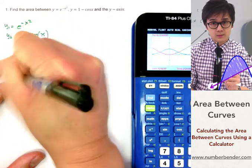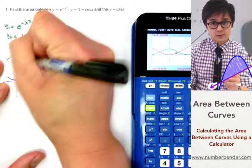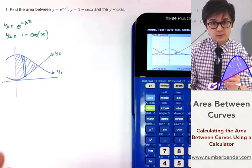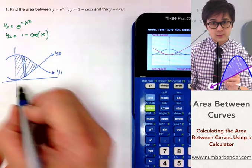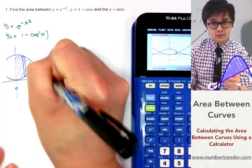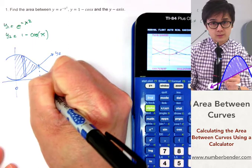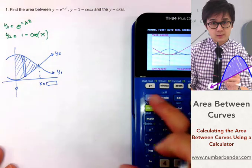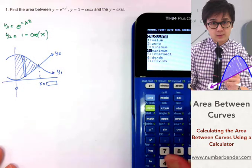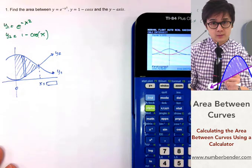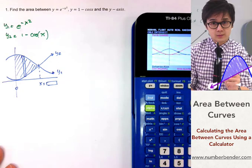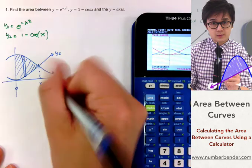Using the vertical method or the top minus bottom method, we'll be able to find the integral from zero up until this value of x. To find the point of intersection, we'll use the calculator: second function trace for calc, go to intersect which is 5, and it will ask you to use the first curve and the second curve to approximate the point of intersection, and this is giving us 0.942.